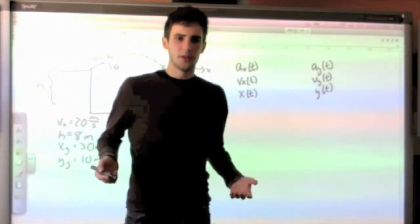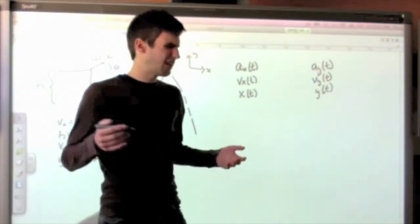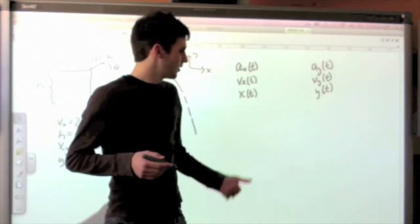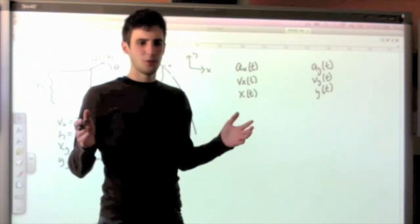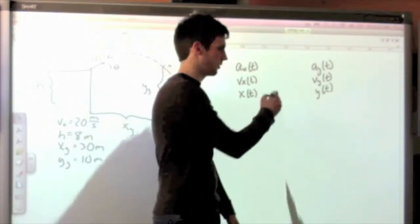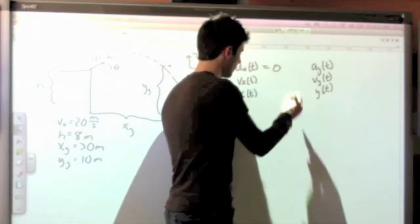So the first ones we always start off with are accelerations, and that's because we have some kind of physical motivation to choose them. So in the x direction, we know we've got no forces, nothing causing the ball to do anything, so we should have an acceleration of zero.